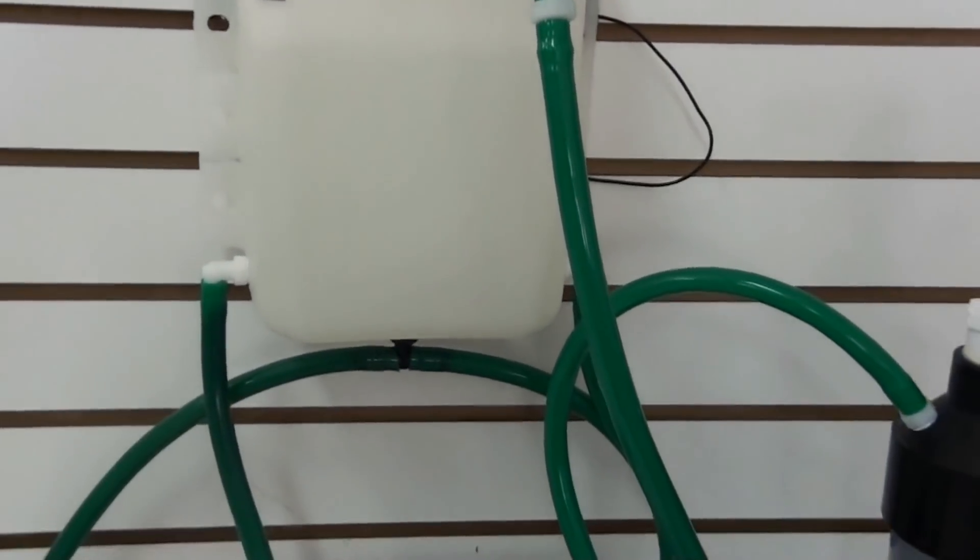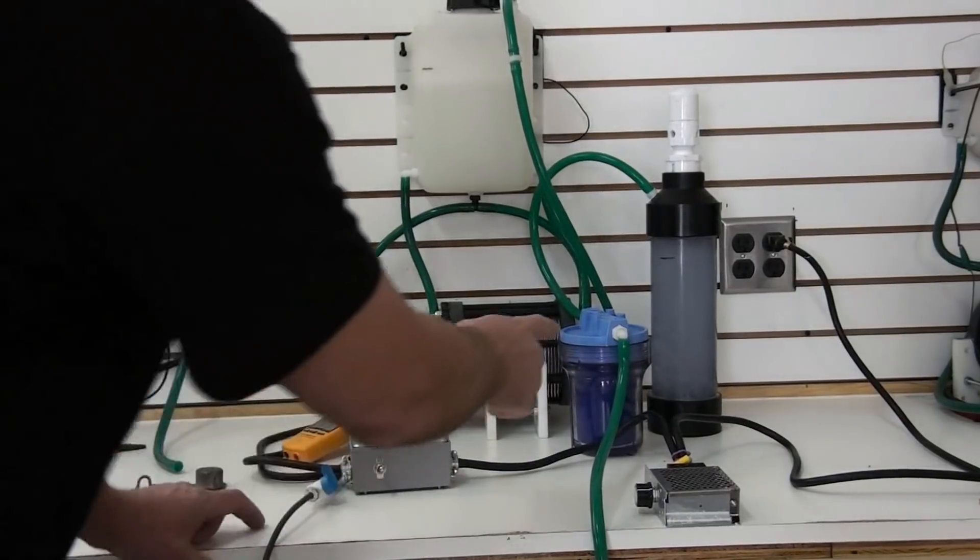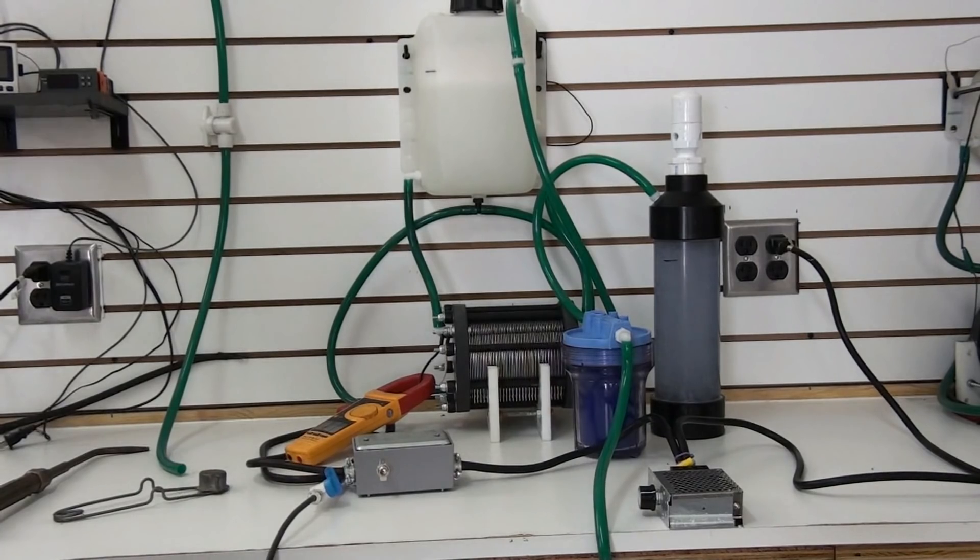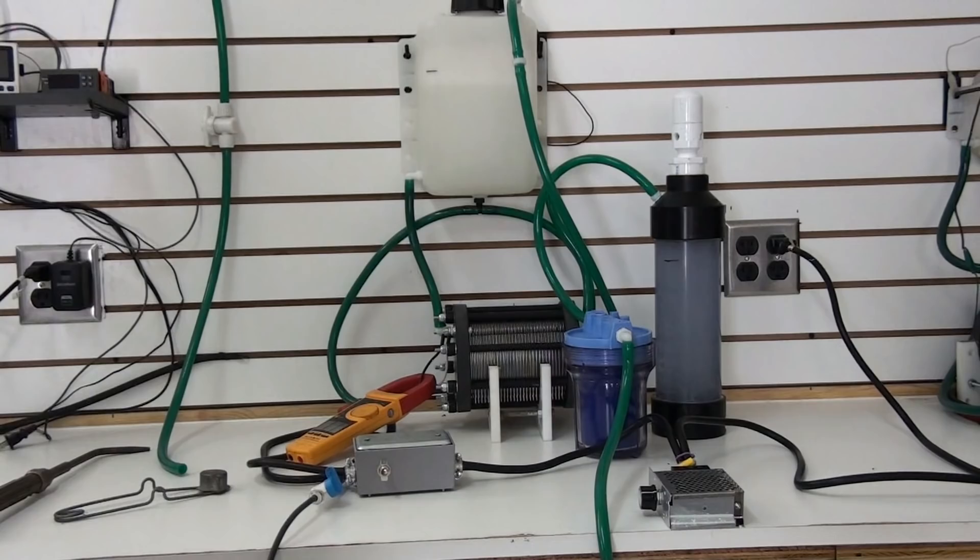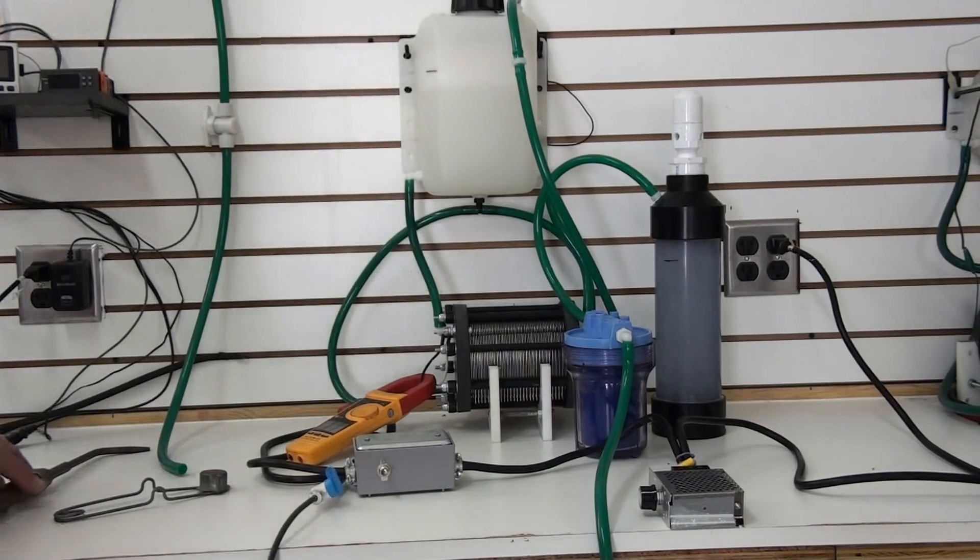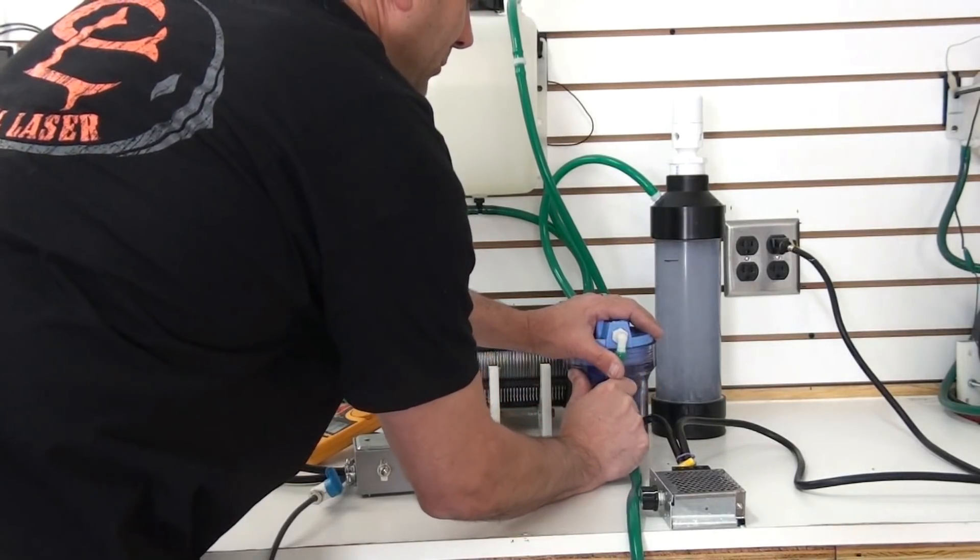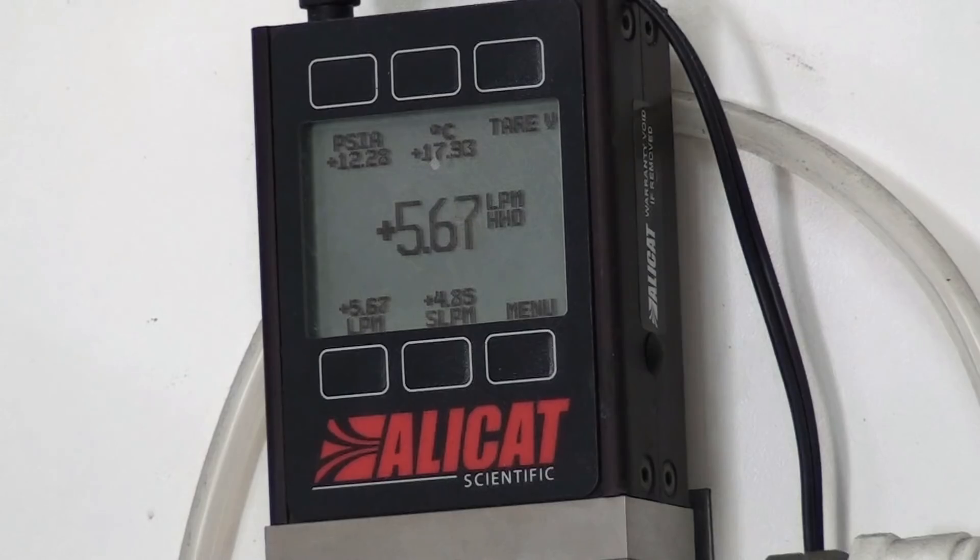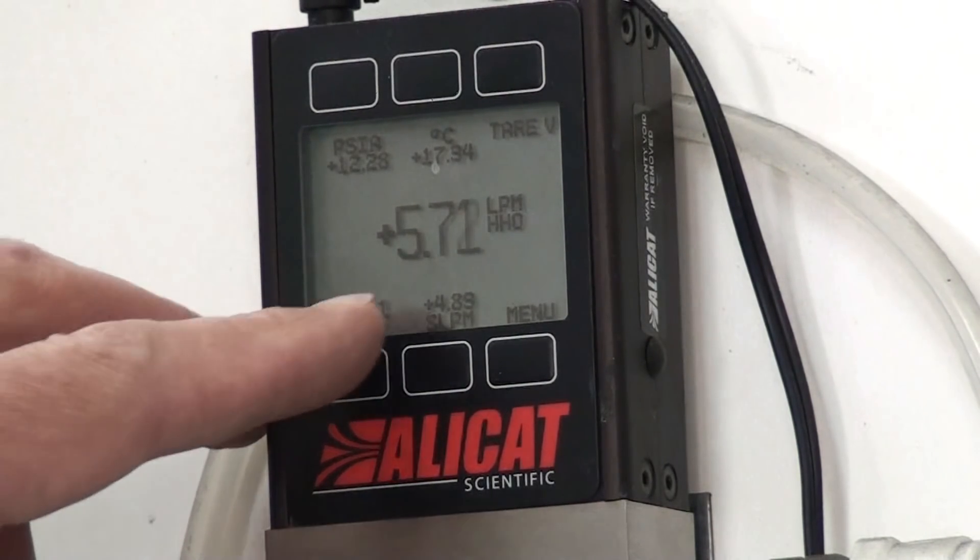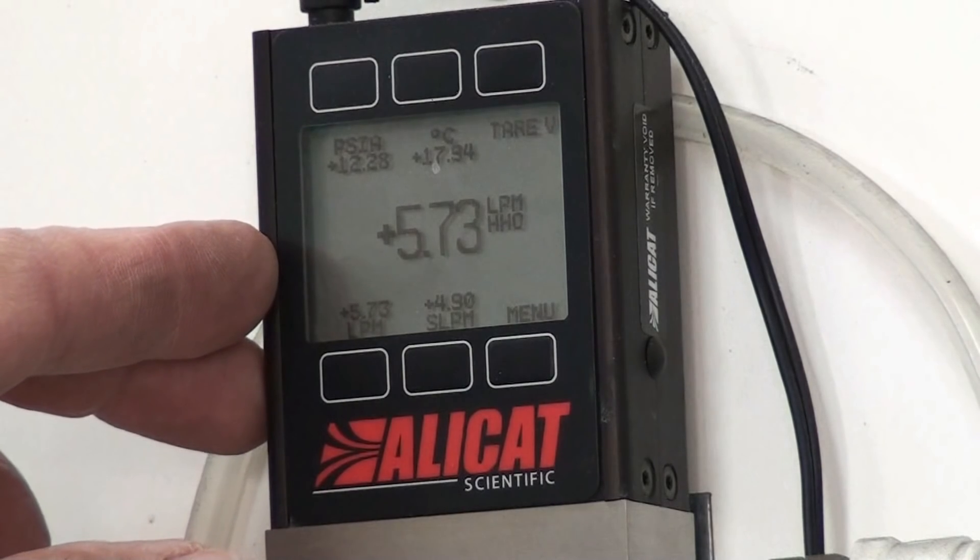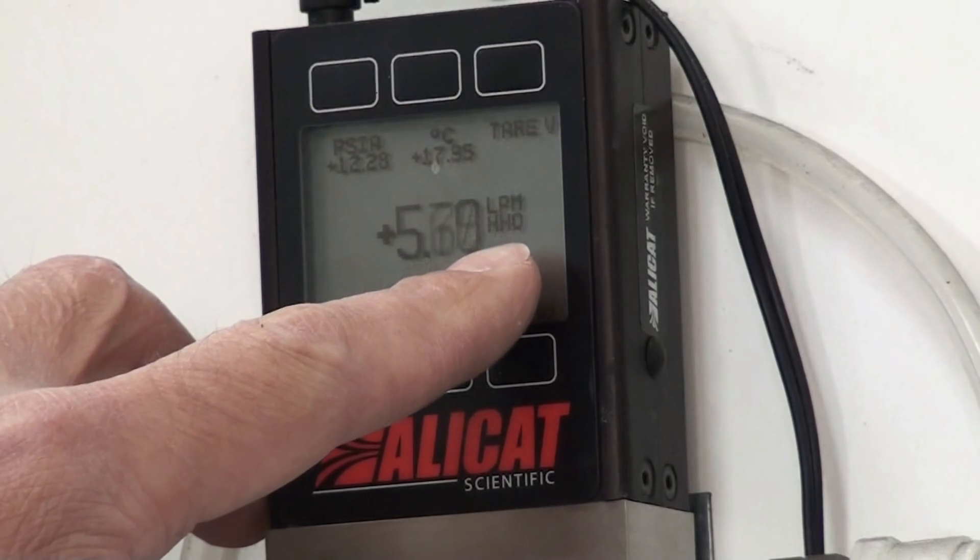Now I'm going to show you how much this system will produce. I'm going to hook the output tube into our system of dryers over here. And we have an AlleyCat Scientific Flow Meter that will show us the exact amount of production that this system is making. Okay, as you can see, we're producing 5.7 liters a minute.